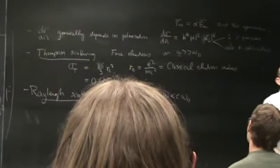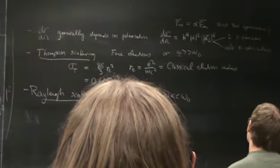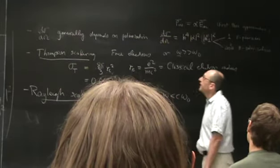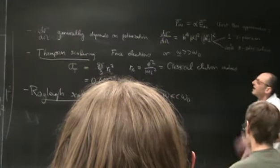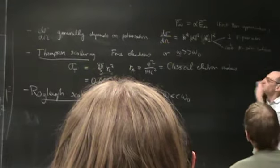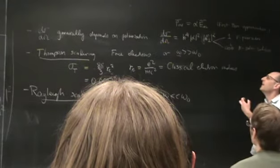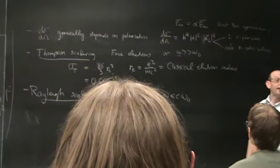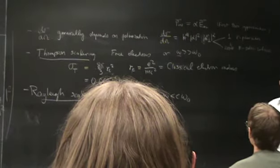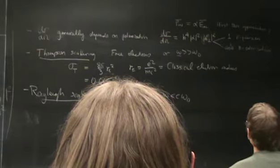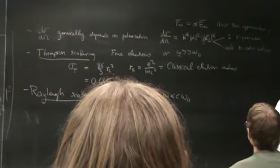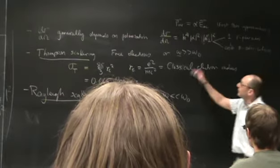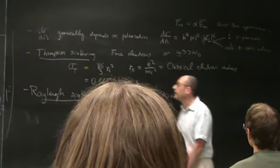That constant is the Thompson scattering cross-section, as long as the photon energy is small compared to the rest mass of the electron. Once we reach that high energy, we have to consider Compton scattering. But in the regime in between, we have constant scattering.